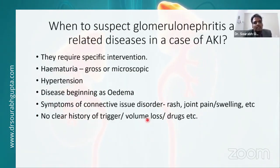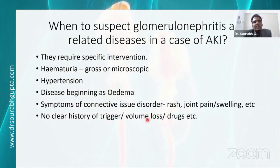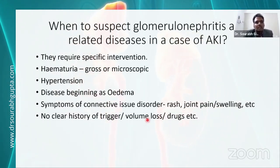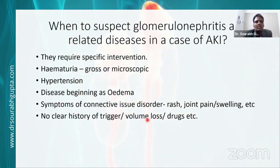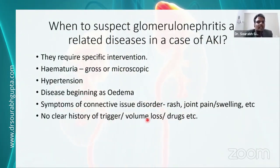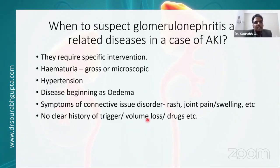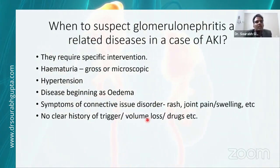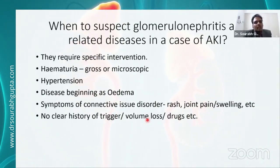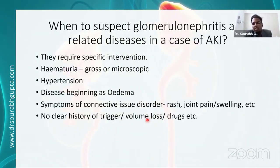When to suspect a glomerular disease: if there is gross or microscopic hematuria, new onset edema, hypertension, or systemic symptoms of connective tissue disorder at disease onset, without any clear history of volume loss, drugs, or a specific trigger, one should suspect a glomerular disease or an interstitial disease.